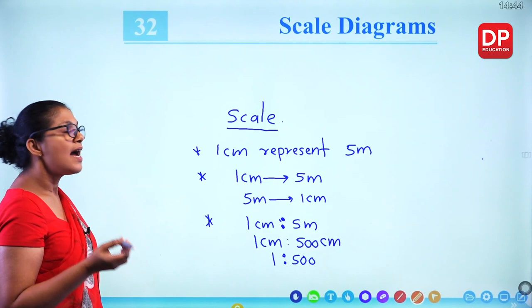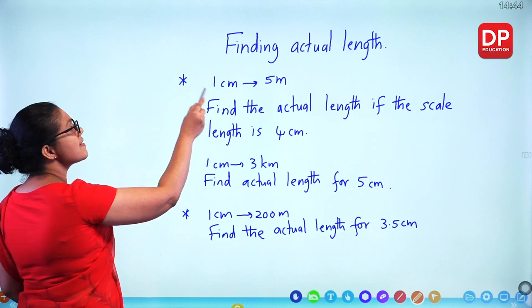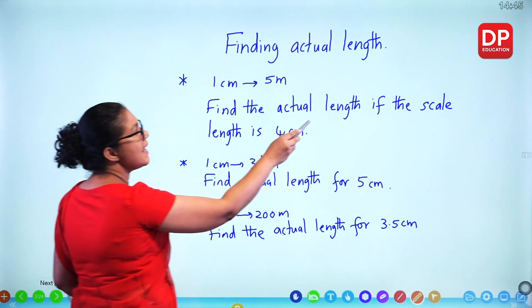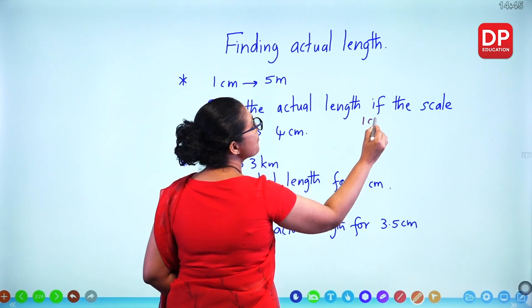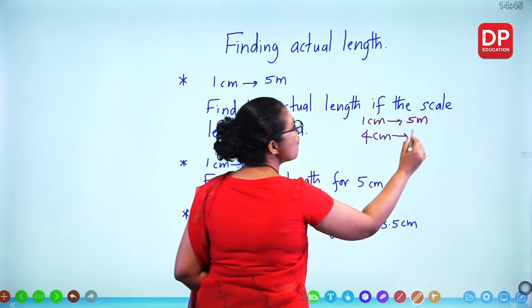Now we'll see how to find actual length if the scale is given. For example: scale is 1 cm represents 5 metres. Find the actual length if the scale length is 4 centimetres. We write 1 cm represents 5 metres, then 4 cm represents 5 times 4 — so the answer is 20 metres.